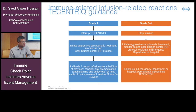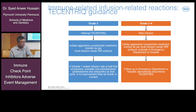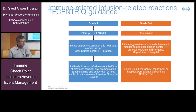For immune-related infusion reactions: at grade 2, interrupt the infusion and initiate aggressive symptomatic treatment per guidelines. If symptoms reduce to grade 1 or below, restart infusion at half the previous rate — prolonging the infusion time to reduce allergic reaction risk. Consider oral pre-medication such as antihistamines and antipyretics at the next cycle. For grade 3 to 4 events, stop the infusion, initiate aggressive symptomatic treatment, monitor per local infusion center protocol, and evaluate in the emergency department or hospital.